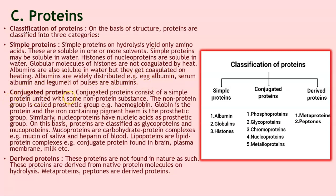Conjugated proteins consist of a simple protein united with some non-proteinic substance. The non-protein group is called the prosthetic group. Example: hemoglobin — globin is the protein and the iron-containing pigment heme is the prosthetic group. Similarly, nuclear proteins have nucleic acids as the prosthetic group. On this basis, proteins are classified as glycoproteins and mucoproteins. Mucoproteins are carbohydrate-protein complexes, e.g., mucin of the saliva and heparin of blood. Lipoproteins are lipid-protein complexes, found in the brain, plasma membrane, milk, etc.